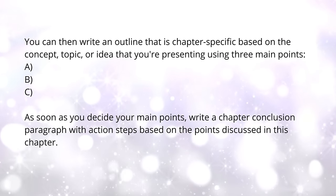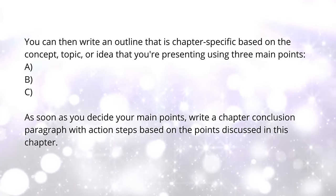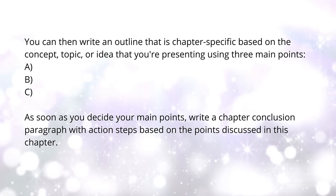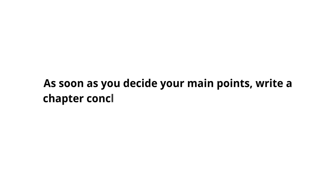You can then write an outline that is chapter specific based on the central idea using three main bullet points. And of course, you can give or take the amount of points that you want to make, but starting with three is a good way to just get going. As soon as you decide your main points, you write your chapter conclusion paragraph with action steps based on the points discussed in this chapter.